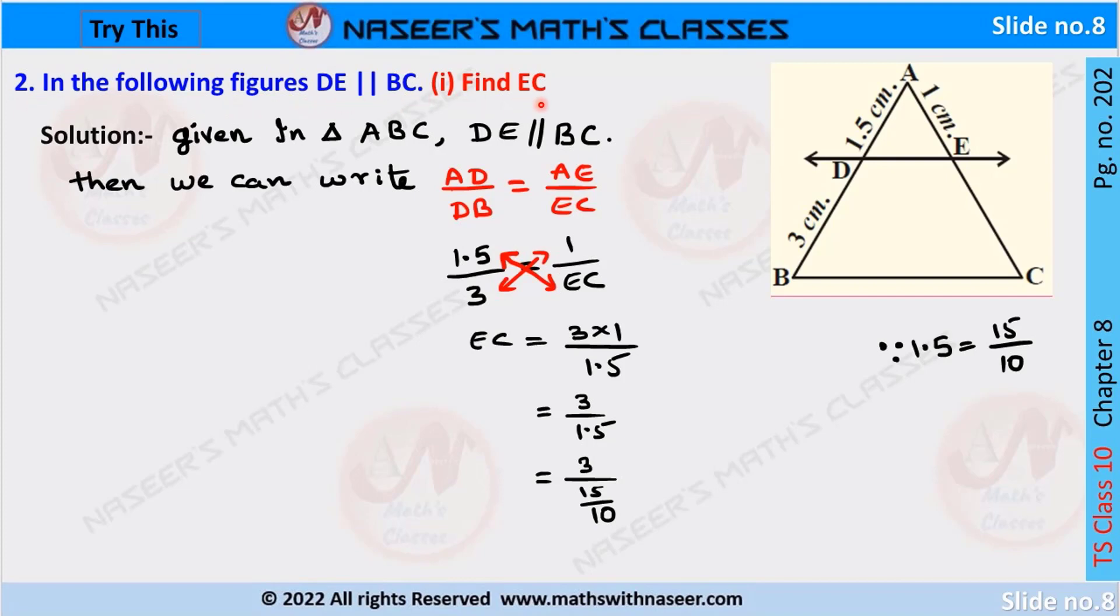We have to find the value of EC. In triangle ABC, DE is parallel to BC. Given: BD = 3 cm, DA = 1.5 cm, and AE = 1 cm. We already know that if DE is parallel to BC, then the ratio of the corresponding sides are equal. So we can write AD/DB = AE/EC.